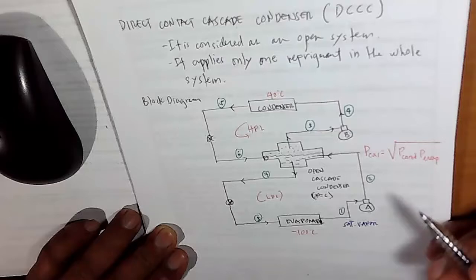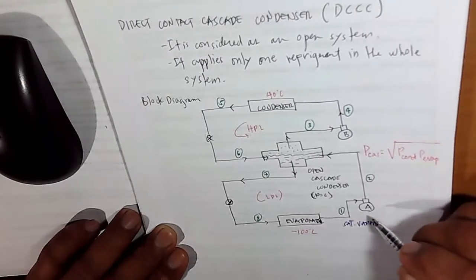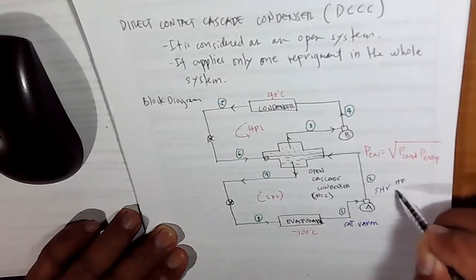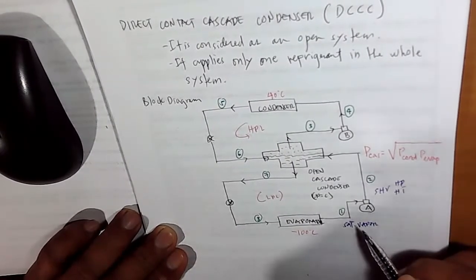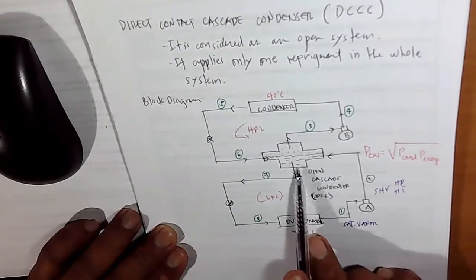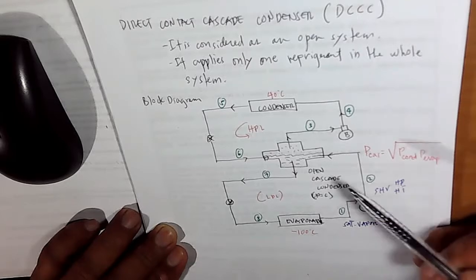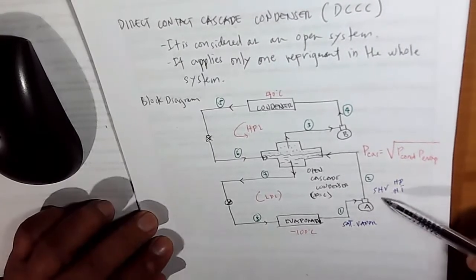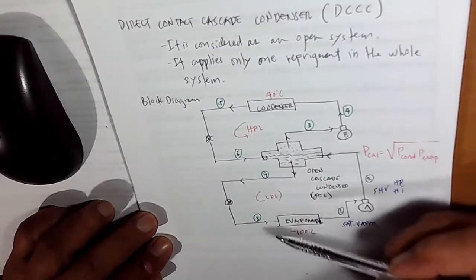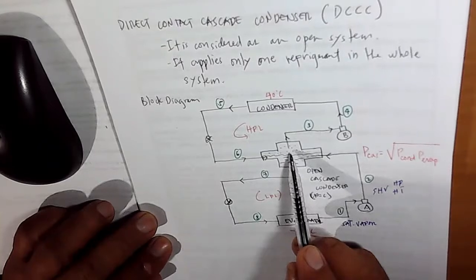That is the inlet requirement as it enters the compressor. When you compress it isentropically, it will change to superheated vapor — high pressure, high temperature — at the lower loop condition. It will now go to your cascade condenser, which is an open system, and mix with the refrigerant inside. Since the superheated vapor is submerged in the liquid, some of the superheated vapor will convert into liquid, and some of it is converted once again into saturated vapor.